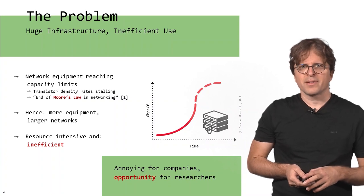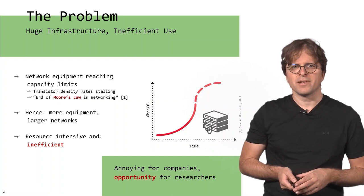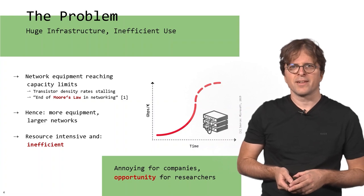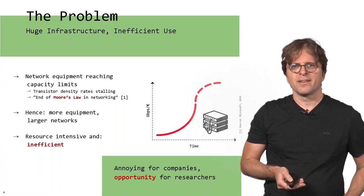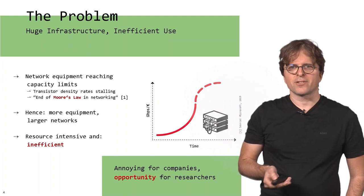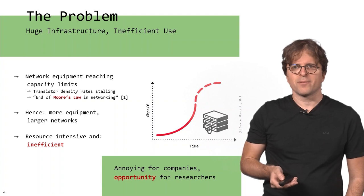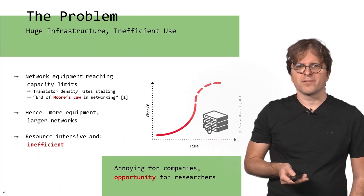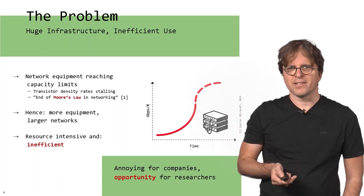The problem we are currently facing is that network equipment is reaching capacity limits. Transistor density rates are stalling, power density rates are stalling, and people call this the end of Moore's law in networking. The consequence is we will have more and more equipment and need larger networks, and this can be quite resource intensive and inefficient. That's very annoying for companies, but researchers are starting to explore alternative architectures.